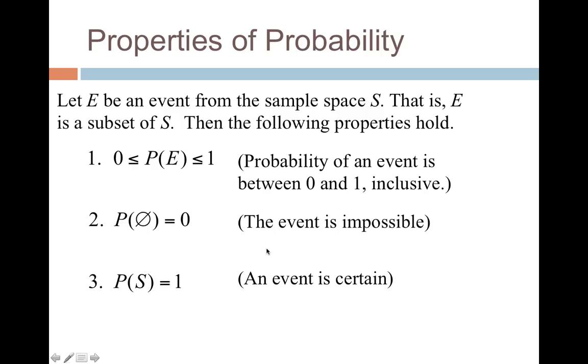Quick review of probabilities. They have to be a number between or including 0 and 1. So you can have the probability of something be 0 or 1 or any number in between. You cannot have a probability greater than 1, so you can't have a probability of like 9 halves or something like that. And you can't have something less than 0, so you can't have a negative probability.